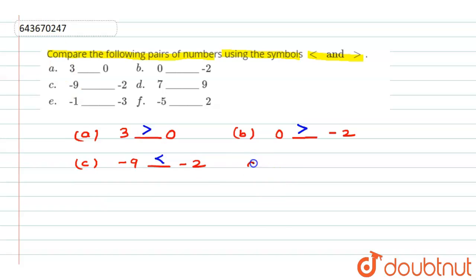Now question number D: 7 blanks 9. In positive, greater value gives greater results. 7 is less than 9, so here less than.